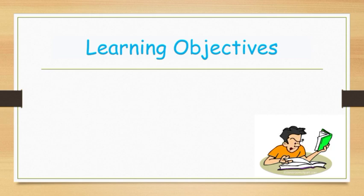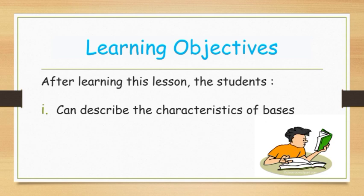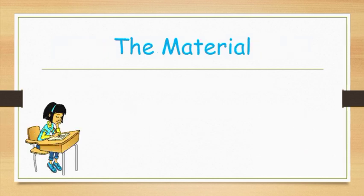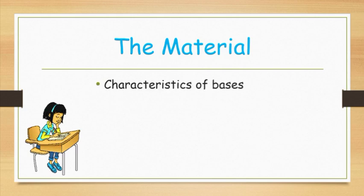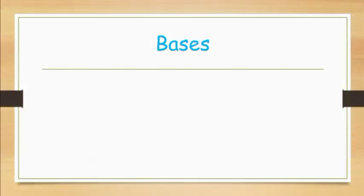The learning objectives. After learning this lesson, the students: 1. Can describe the characteristics of bases. 2. Classify the bases. Today's materials are: 1. Characteristics of bases, which consists of physical and chemical properties, and also strong and weak bases. 2. The nomenclature of bases — here you will learn how bases form from the reaction between basic oxide with water. 3. The application of bases in our daily life.